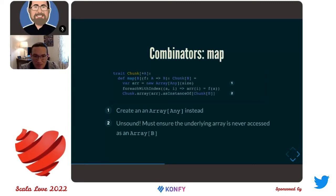This is legitimate and safe only if this array — this internal `arr` variable — is never referenced as an array of B. And actually, as noted in chat, this is the same trick used inside ArrayList. That array must be kept private — that's one of the key elements here. But as long as it's kept private and never referenced as an array of B, this is totally legitimately safe.